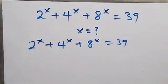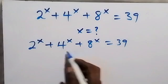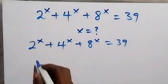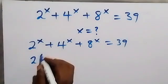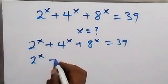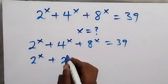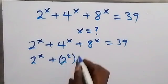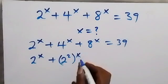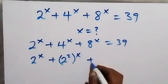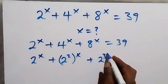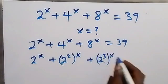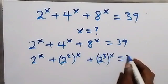Let's rewrite everything to base 2. We already have 2 raised to the power x, then plus 2 squared raised to the power x, since 2 squared is 4, then plus 2 cubed raised to the power x, which equals 39.